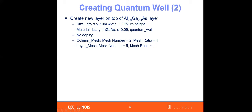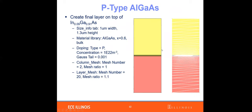This forms a NIP structure. We specify the column mesh and layer mesh information, and assume a mesh ratio of one, meaning uniform mesh in the quantum well region. Then we copy the first N-layer on top of the quantum well, making it a P-type aluminum gallium arsenide with the same aluminum mole fraction but changing the doping type to P-type, same doping concentration with a Gaussian tail, and similar column and layer mesh.